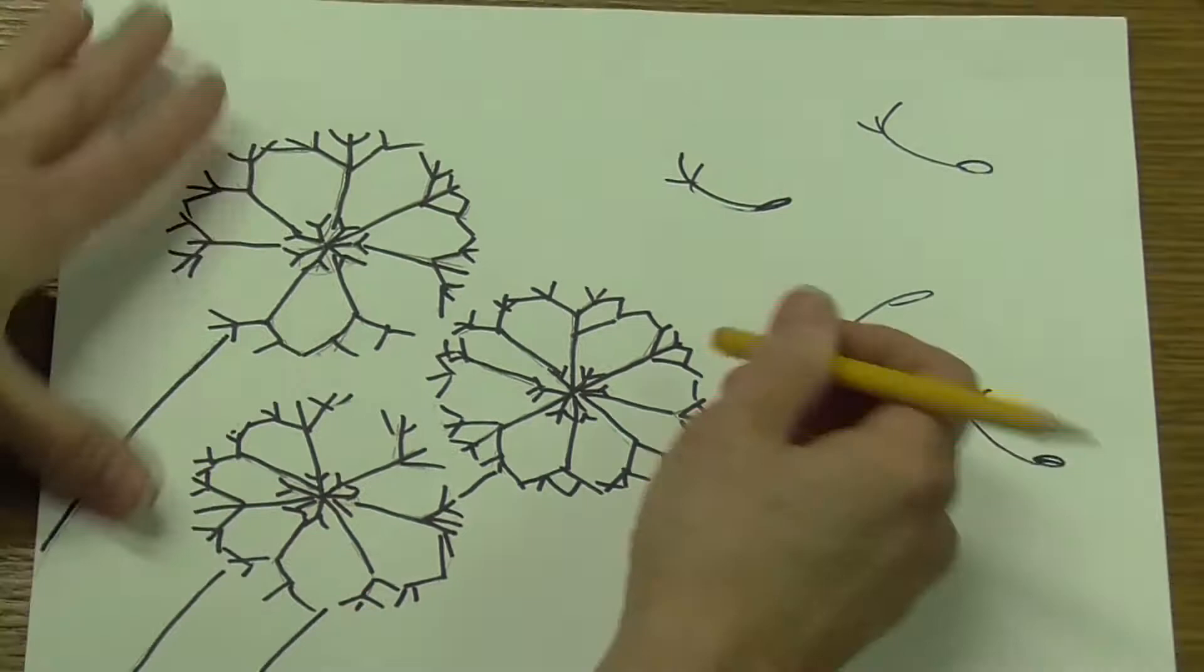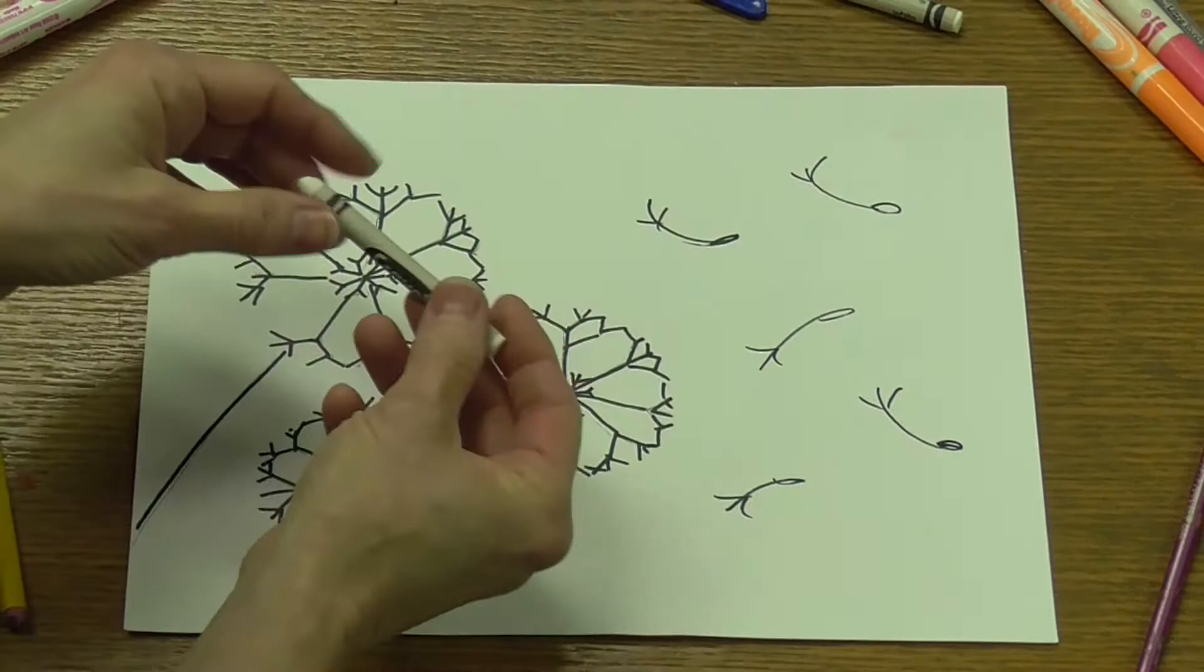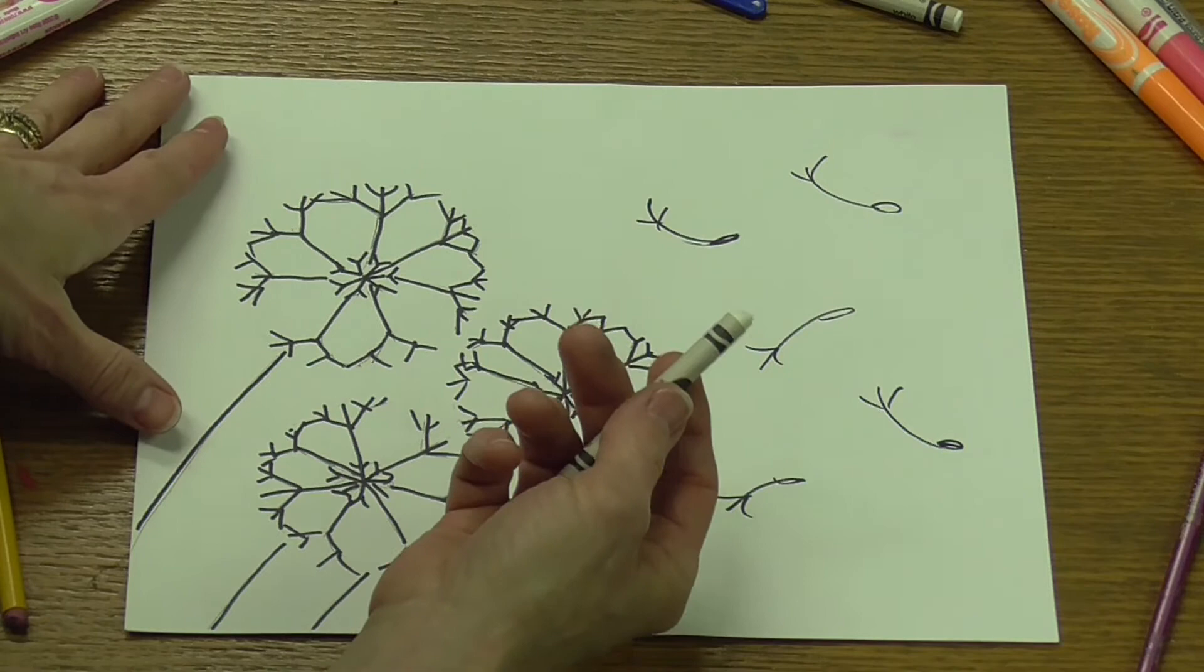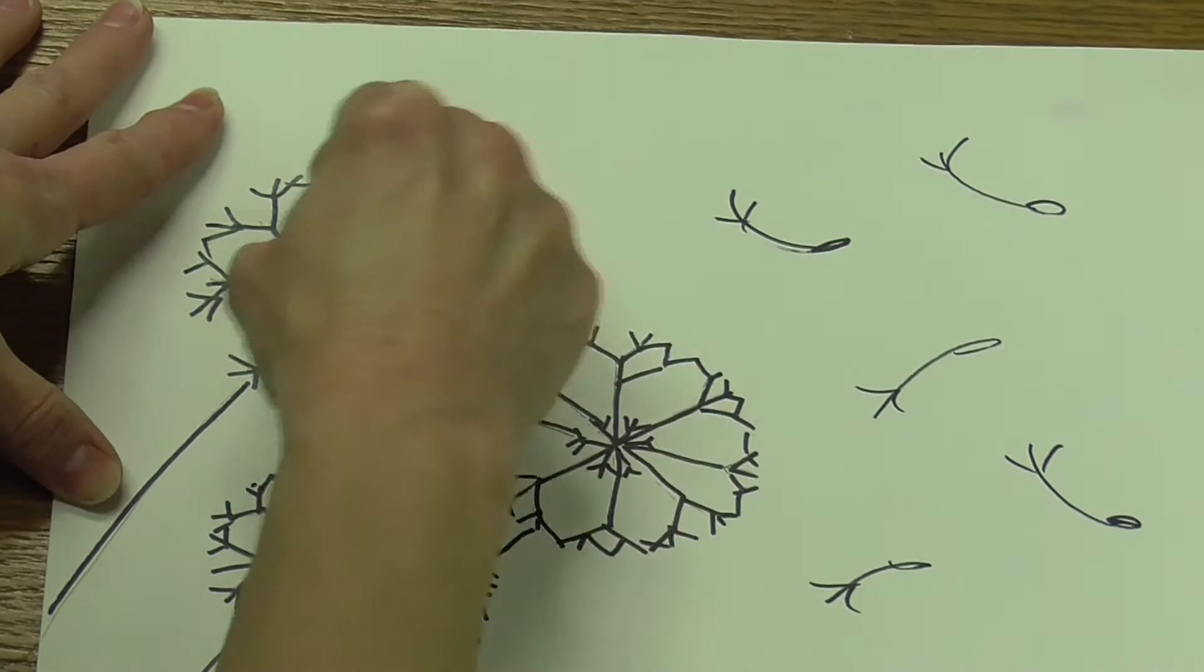The next process is a crayon resist. I'm going to get a white crayon—any kind of crayon or oil pastel works. It's not going to look like I'm doing anything, but I'm going to color with that white crayon and fill this in completely, because when I start to paint with my marker, I want to leave this part white.